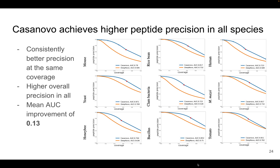Showing the actual experimental results on the full benchmark test set, we see that in all nine different species, Casanova consistently achieves better precision at the same coverage compared to DeepNovo. Overall, in all of these species, Casanova achieves higher precision when forced to make predictions for all spectra in the test set. As an additional summary metric, we can look at the area under the precision-coverage curves, and when comparing two models using that metric, Casanova outperforms DeepNovo by 0.13 on average.